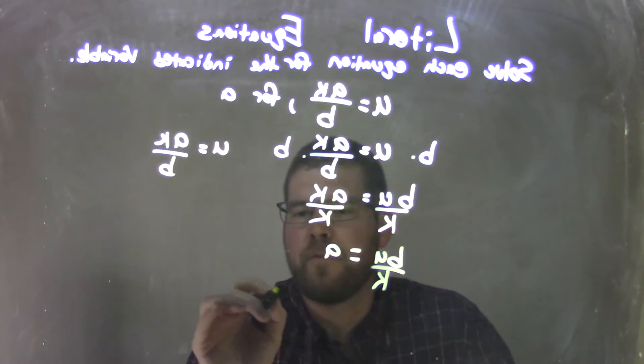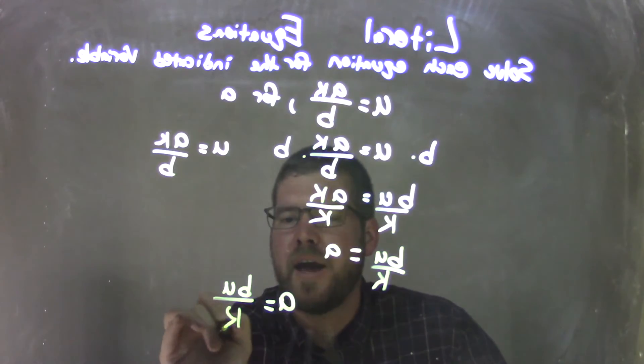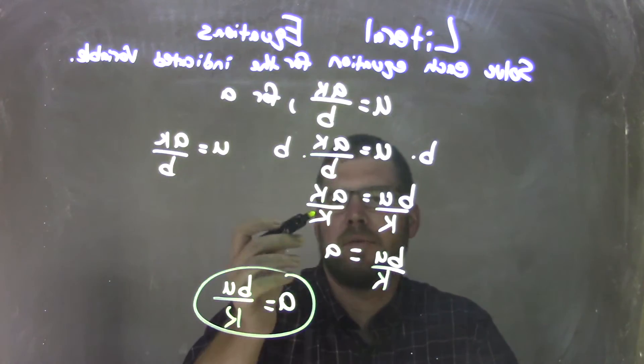And so I can rewrite this to A come first and A equals BU over K. And there we go. Pretty simple, right? Divide by K.